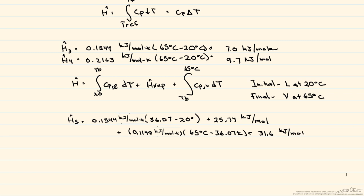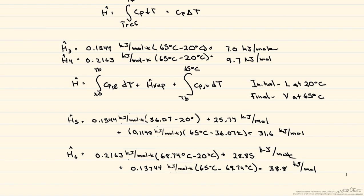And so now we're going to do the same thing for the hexane. Note we used the exact same approach as we did for H5. The only things that are different are the C sub P's, the boiling points, and the heat of vaporization.